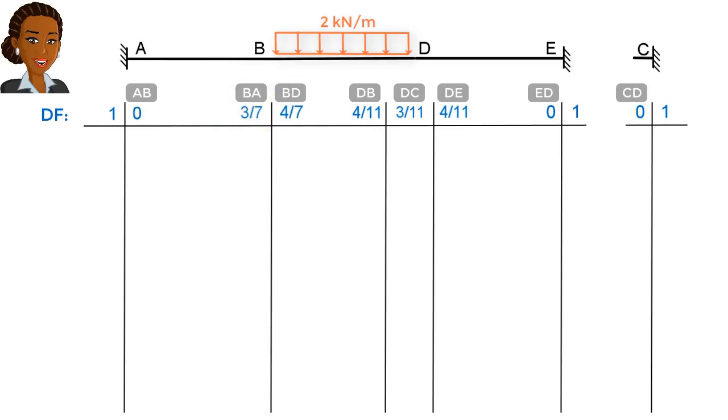We label the remaining table columns in a similar manner. Note that for CD, bending moments at the lower end of the member need to be written here, and the values for the upper end of the member go here. This is important to keep in mind, since half of any value that is added to this column needs to be carried over to this column.